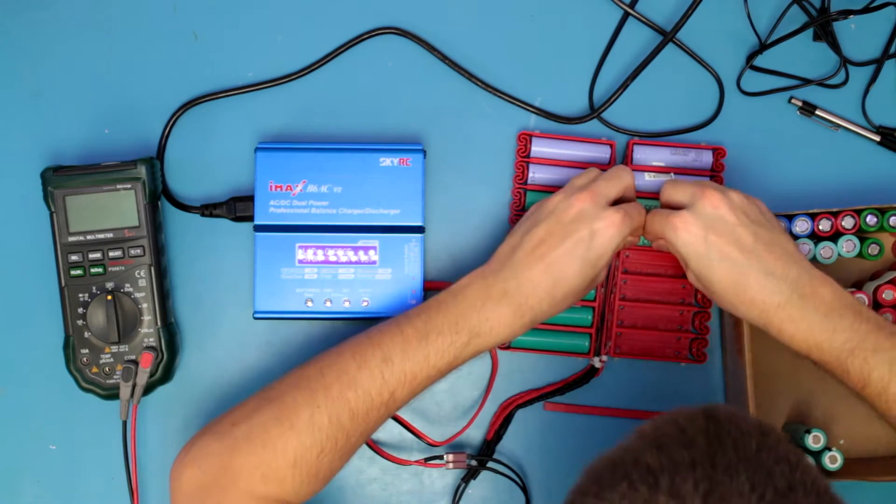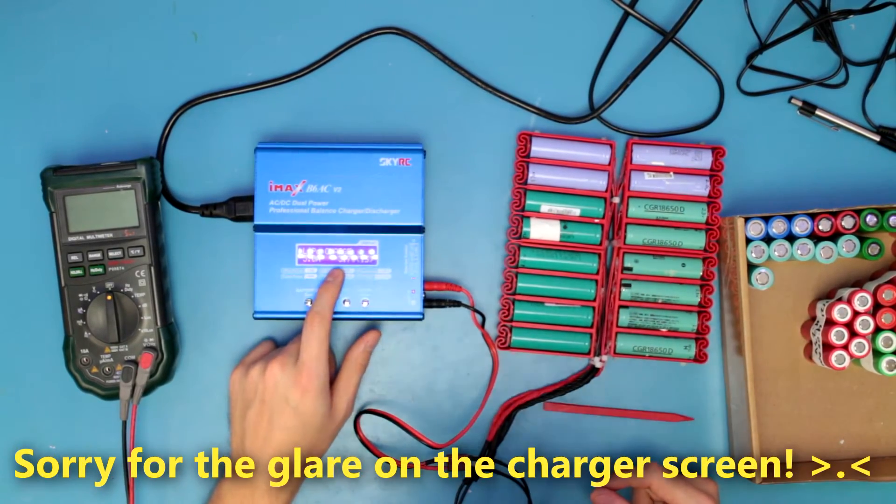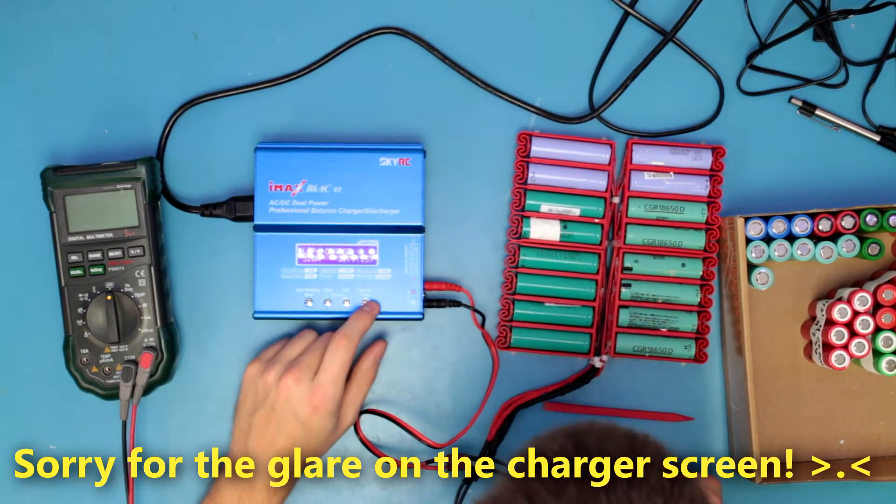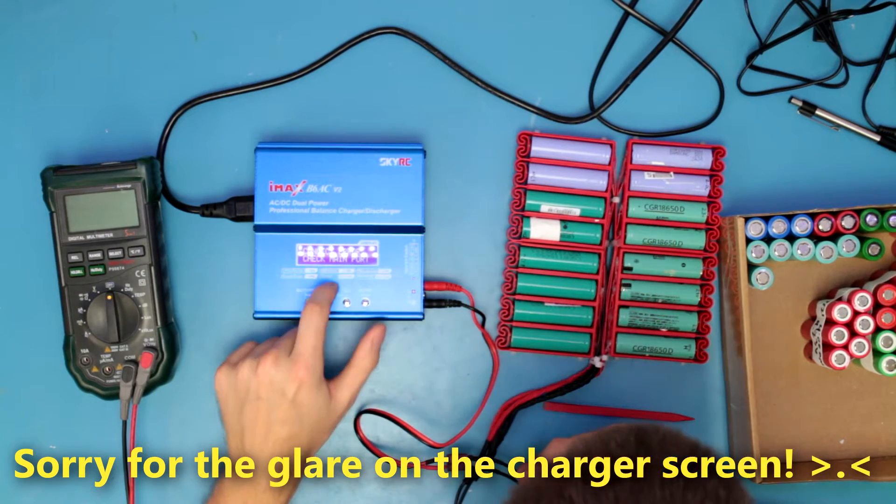I'm just gonna go ahead and load up the bank here. These batteries are pretty similar in capacity. There we go. I have everything ready to go. So 5 amps at 3.7 volts for all 16 cells. Let's go ahead and start it and... connection error. Check main port.